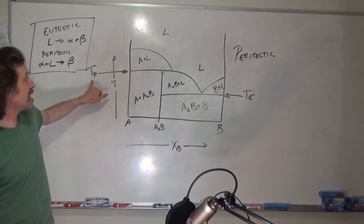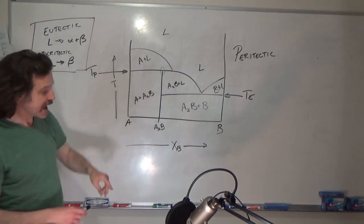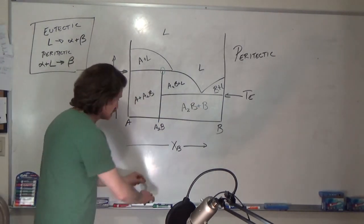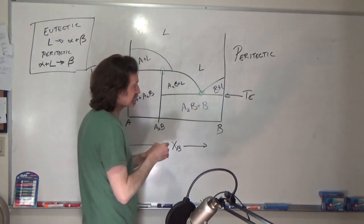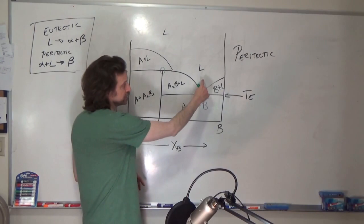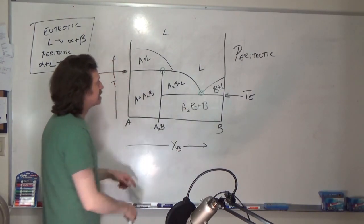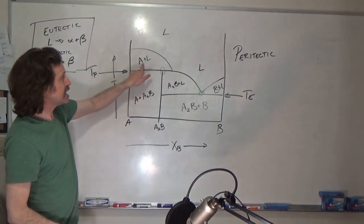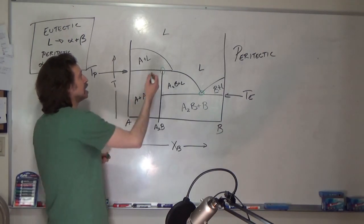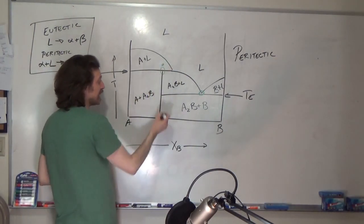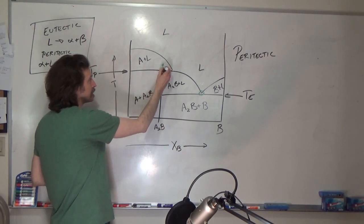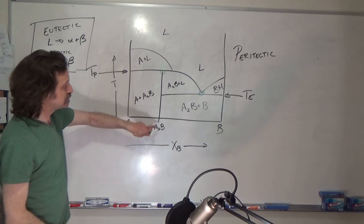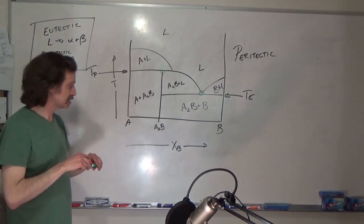In this diagram, we've got a paratectic, which is happening there, and we have a eutectic, which is happening here. So again, that eutectic liquid turns into two solids, and paratectic, an A plus L, right at that composition and at that temperature, transforms into a single phase. So that's what the paratectic is.